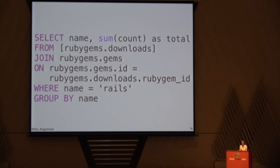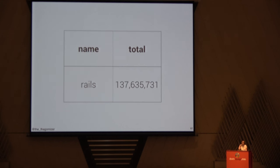We were also wondering how many downloads Rails has specifically. Adding a WHERE clause restricted to gems named Rails gives back a result that's actually pretty high — in the top 50, I believe actually in the top 20. But it wasn't one of the top 10 most popular, which surprised me a lot.